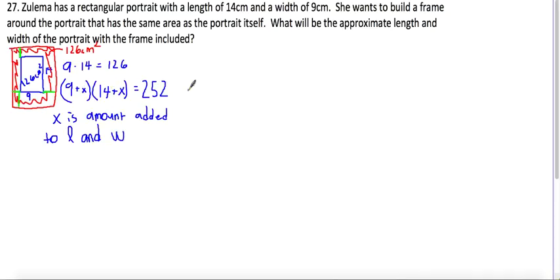So use FOIL to multiply the two binomials and we'll get 126 plus 9x plus 14x plus x squared equals 252.